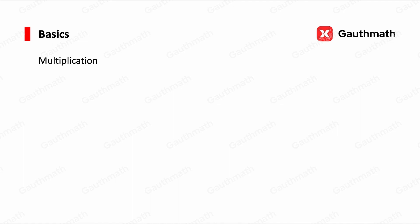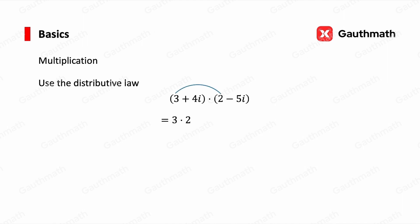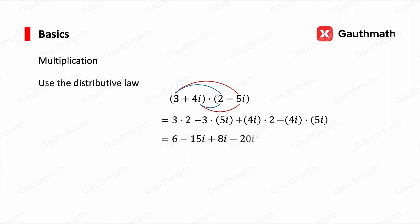For multiplication of two complex numbers, we use the distributive law. For example, (3 plus 4i) times (2 minus 5i): applying the distributive law gives 3 times 2 minus 3 times 5i plus 4i times 2 minus 4i times 5i, which is 6 minus 15i plus 8i minus 20i squared. That becomes 6 minus 7i minus 20 times negative 1, giving 6 minus 7i plus 20, which equals 26 minus 7i.